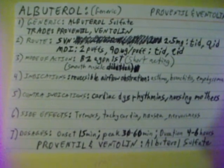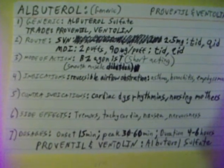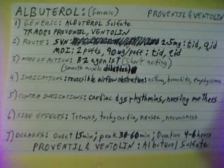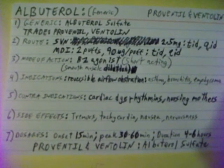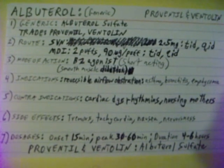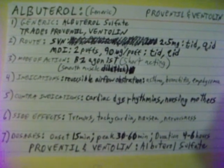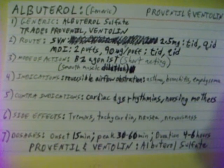The mode of action of Albuterol is a beta-2 agonist, which causes smooth muscle dilation in the breathing muscles. Indications for Albuterol are reversible airway obstruction including asthma, bronchitis, and emphysema. Contraindications for Albuterol sulfate include cardiac dysrhythmias, and nursing mothers should not take it.